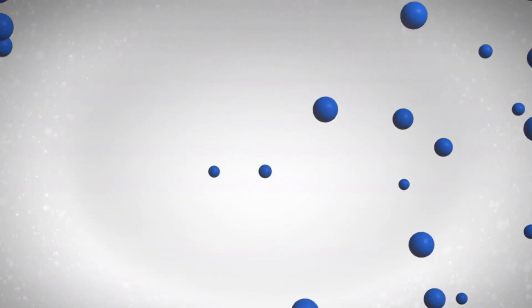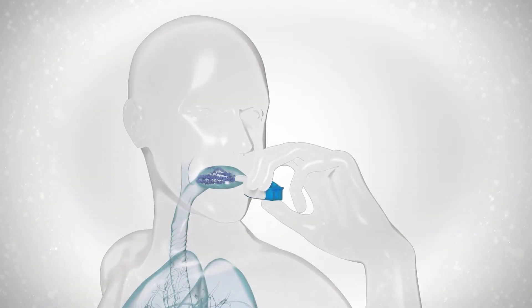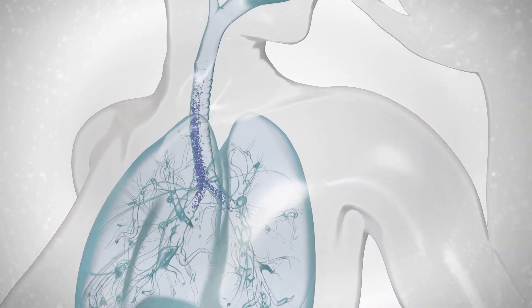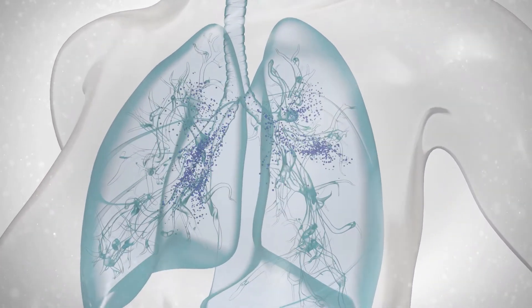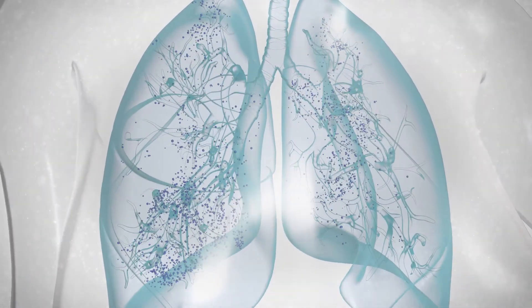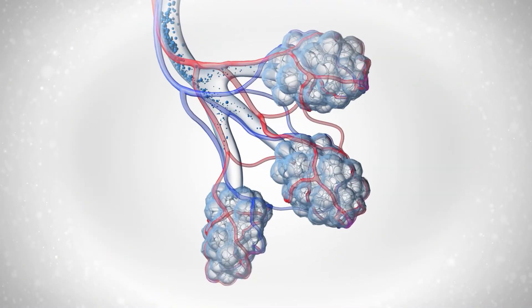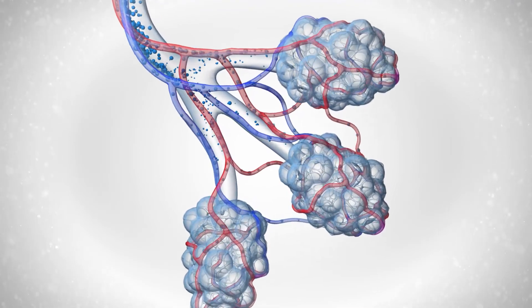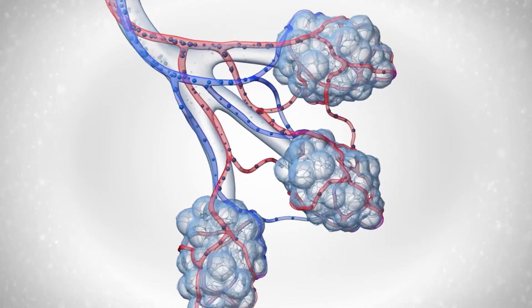Fully respirable and ideally suited for deep lung deposition. The powder is dispersed early in the inhalation allowing more time for the full inhalation to move the triprostanil out of the device and deep into the lungs. Low airflow allows triprostanil to navigate the branching of the airways for consistent delivery. FDKP then facilitates absorption of triprostanil in the distal airways.